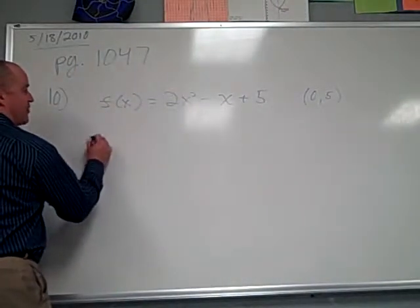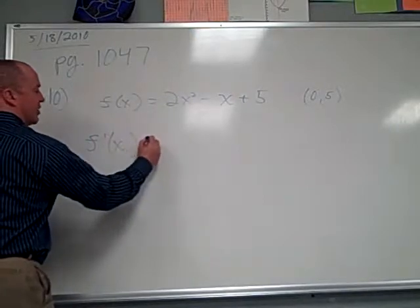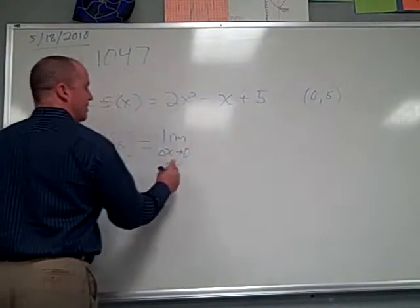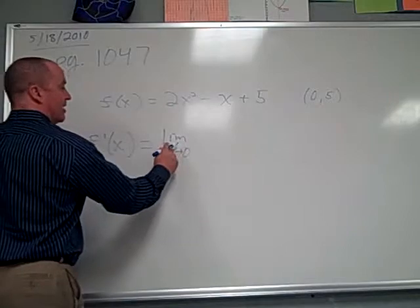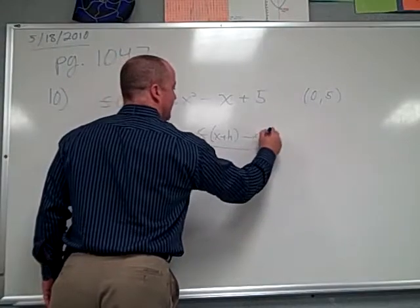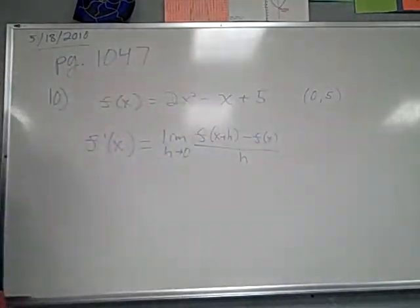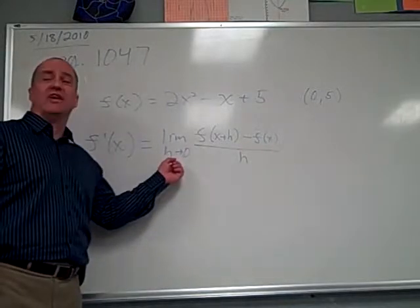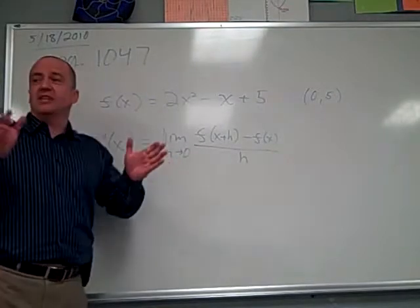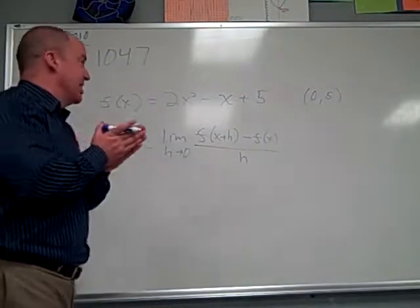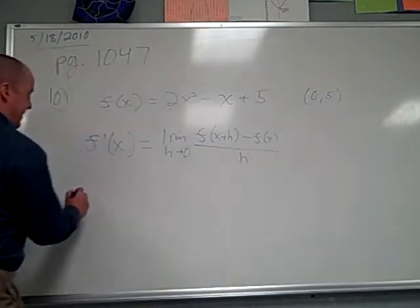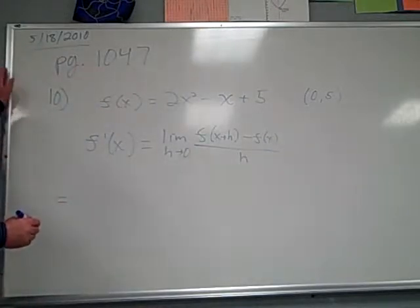Now, we're finding the derivative. f prime of x in general is the limit as delta x approaches 0, and we're calling delta x h now, of f of x plus h minus f of x over h. Are you ready?